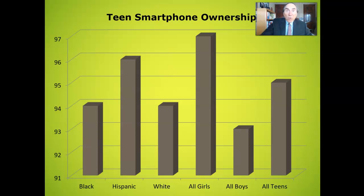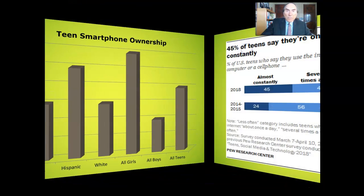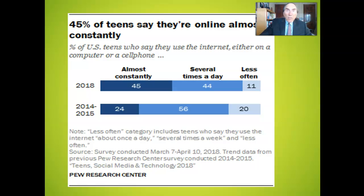Teen girls own smartphones a little more frequently than boys. These smartphones with internet connections in turn fuel more frequent online activities. As smartphone access has become more prevalent, 45% of teens now report almost constantly using the internet, a figure that has nearly doubled from the 24% reported in the 2014–15 survey.